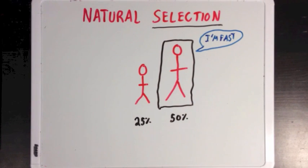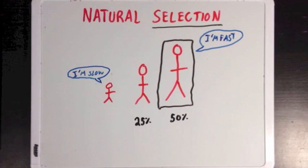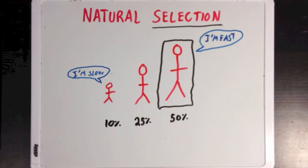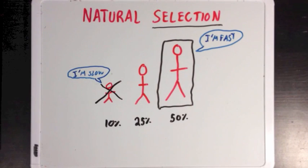On the other hand, selection can also apply to a disadvantageous trait. If we have people who have really short legs and run really slowly, then those people will be selected against and won't pass on traits to offspring as frequently.